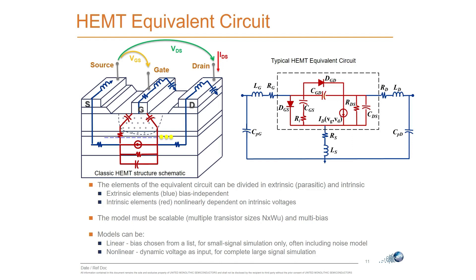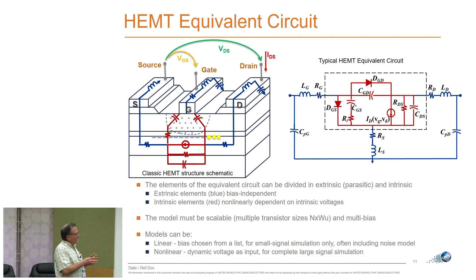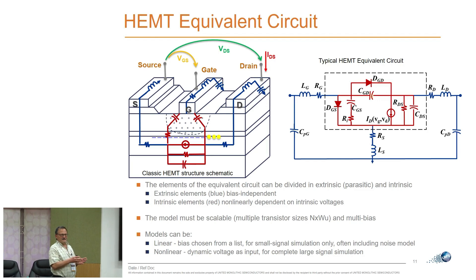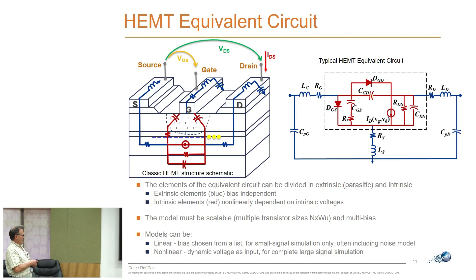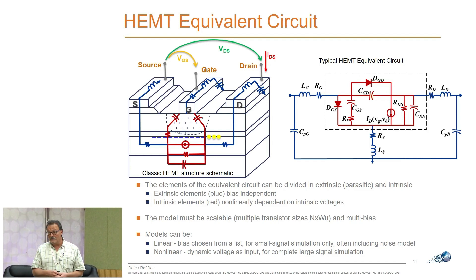Ideally the blue extrinsic and red intrinsic elements are fully separated, but in reality parts of the access resistance can sometimes be nonlinear, making extraction more difficult. Models can be linear — used at a single biasing point for low-noise amplification — or nonlinear with dynamic voltage input, which is needed for power amplification design.